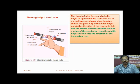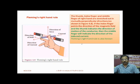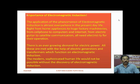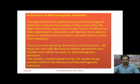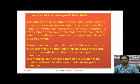Lenz's Law tells about the direction of the induced current or induced EMF produced in the circuit. Fleming's Right Hand Rule is also known as the generator rule. The application of electromagnetic induction is almost everywhere in present-day life — from home appliances to huge factory machinery, from cell phones to computers and internet, from electric guitars to satellite communication. All these need electricity, and all are met with the help of electric generators and transformers which function on electromagnetic induction. Modern sophisticated human life would not be possible without the discovery of electromagnetic induction.